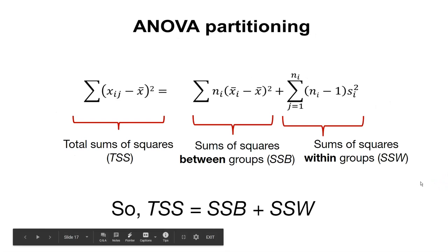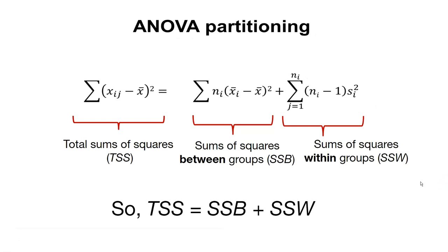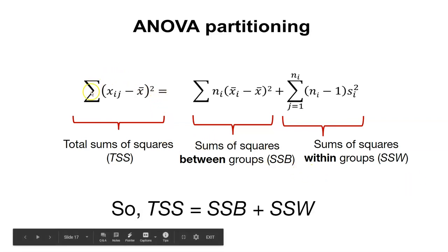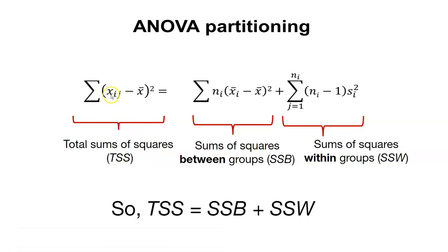In analysis of variance, you can analyze the variance. We can think about our total sums of squares, which we denote TSS, and that's each value x minus the mean squared. We sum that up for all of the points in our data.